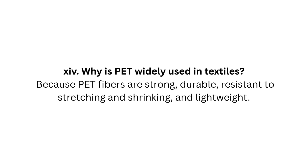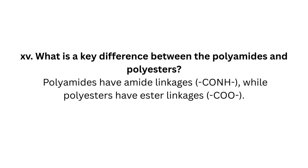Question 14: Why is PET widely used in textiles? Because PET fibers are strong, durable, resistant to stretching and shrinking, and lightweight. Question 15: What is a key difference between polyamides and polyesters? Polyamides have amide linkages (C-O-N-H), while polyesters have ester linkages (COO).